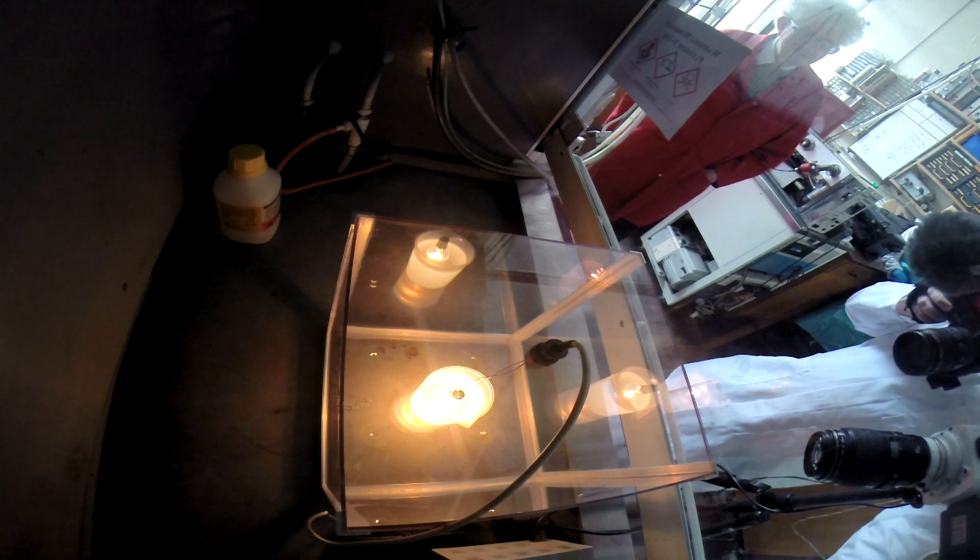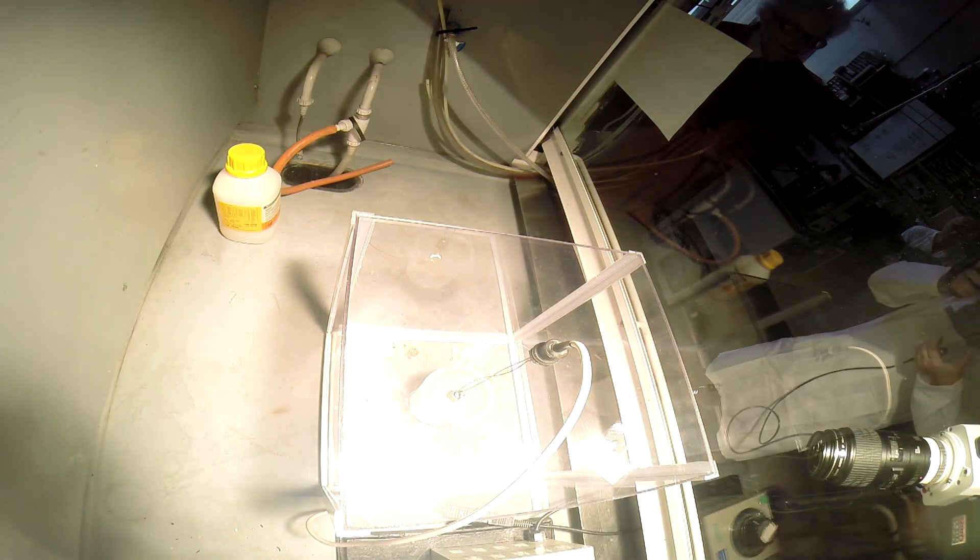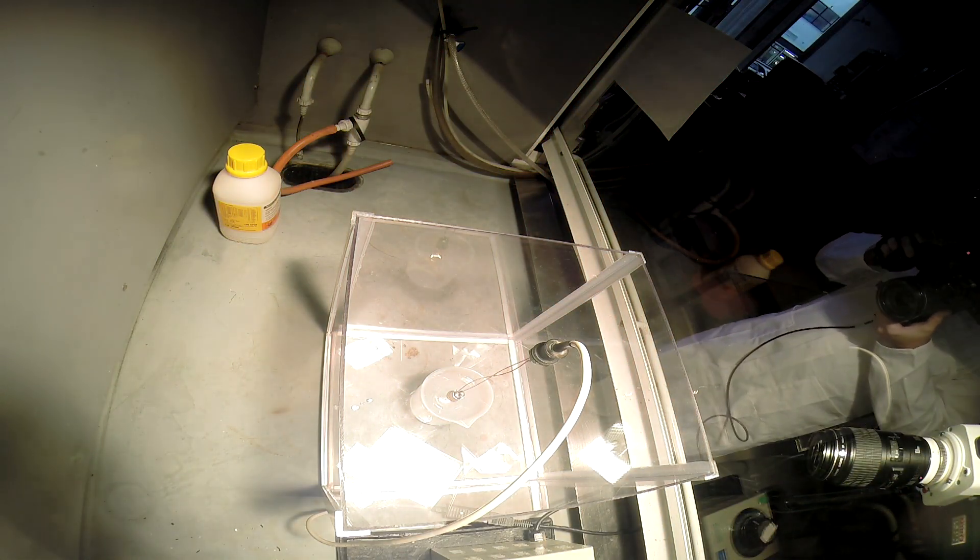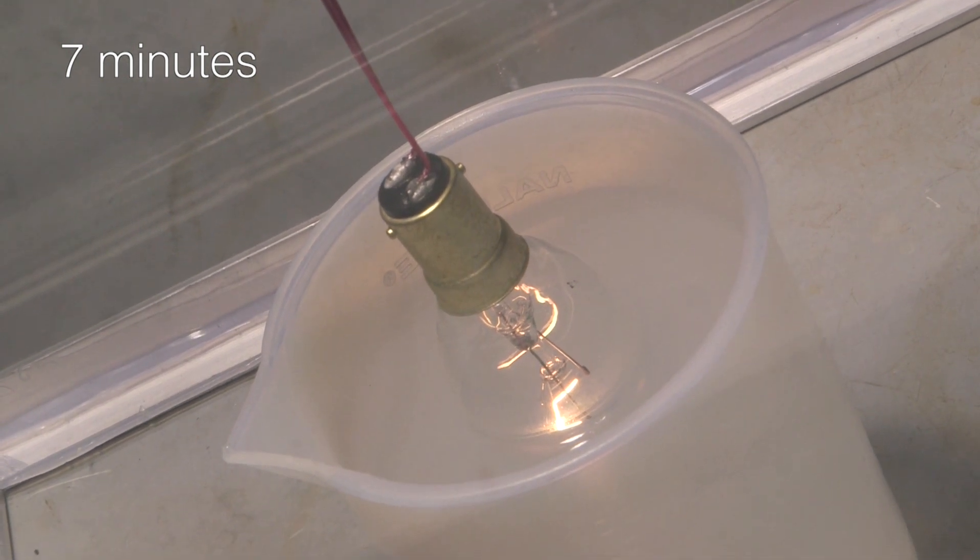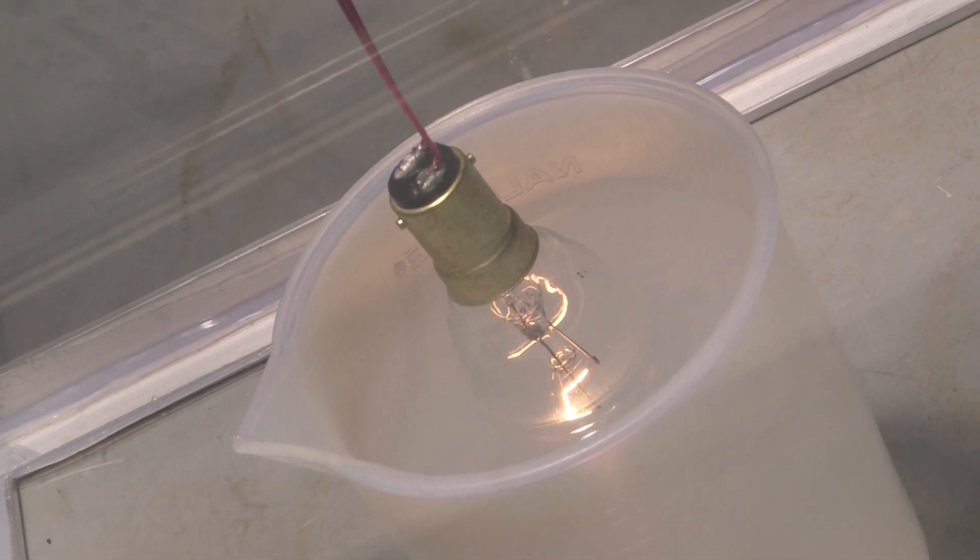Glass, the chemist's friend, we use it for test tubes, bottles, Kips apparatus, but HF attacks glass. Chemically, it breaks the silicon-oxygen bonds and forms silicon-fluorine bonds, and a compound that dissolves away in the liquid HF.